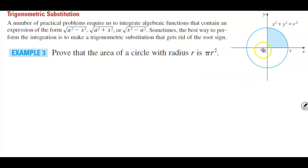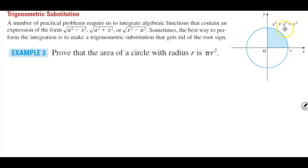We need to take a look at the unit circle when talking about this. We were told a long time ago that it's true, but the only way to actually prove the area of a circle being πr² is by integration. For simplicity, let's place the circle with its center at the origin, so its equation is x² + y² = r².